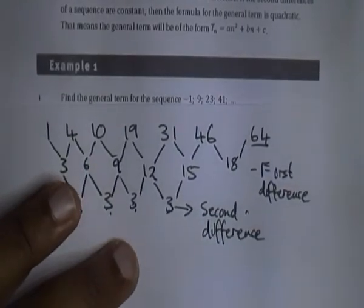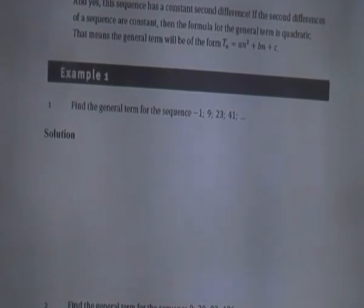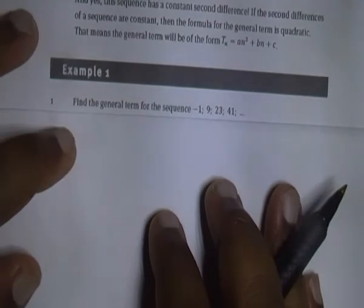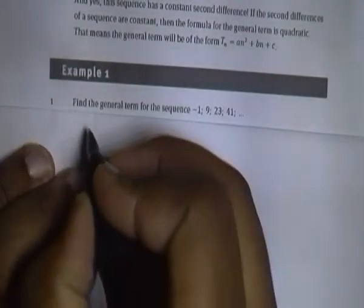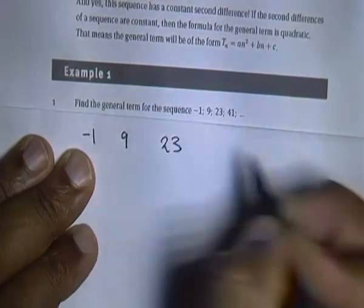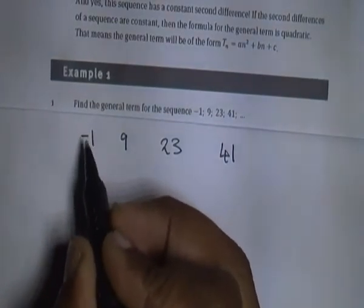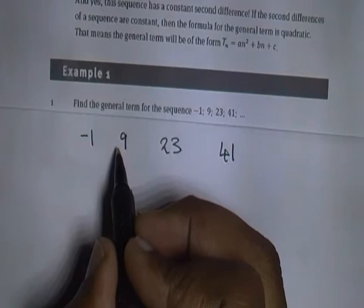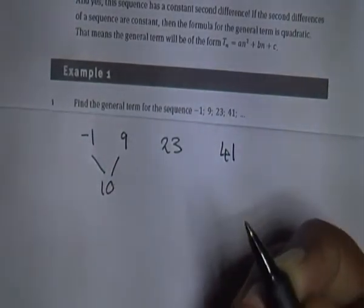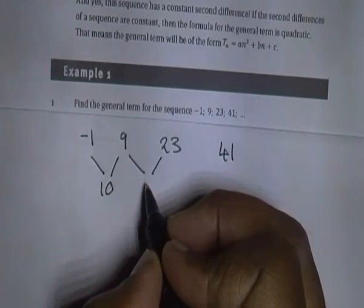In example one you've got a sequence here. Find the general term of the sequence -1, 9, 23, 41. First we need to check what kind of sequence we're dealing with. Let's write the numbers down: -1, 9, 23, 41. The difference between -1 and 9 is 10. The difference between 23 and 9 is 14.